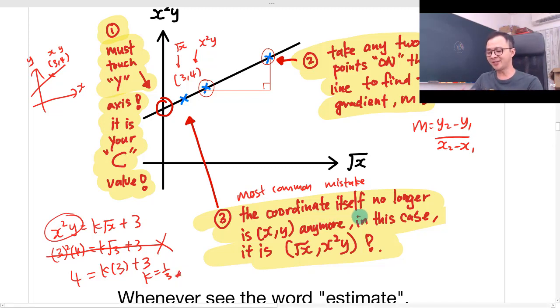So I will say the coordinate itself is no longer X and Y anymore. So in this case, the coordinate itself is the square root X and X square Y.